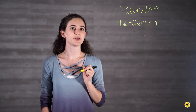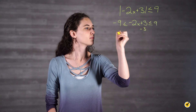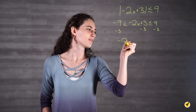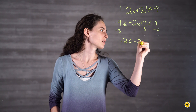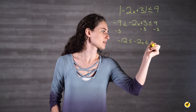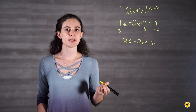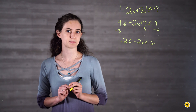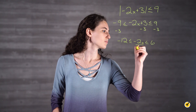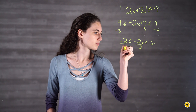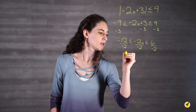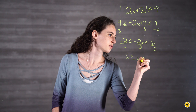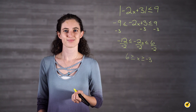Then subtract 3 from each part. This gives us negative 12 is less than or equal to negative 2x is less than or equal to 6. And finally, divide by negative 2. But remember, when you divide by a negative, you have to flip the inequality signs. This gives you 6 is greater than or equal to x, which is greater than or equal to negative 3. And there's your answer.